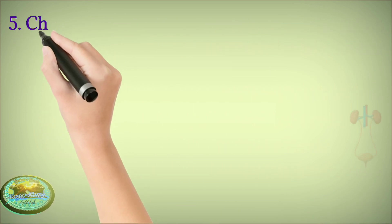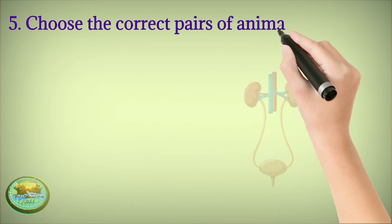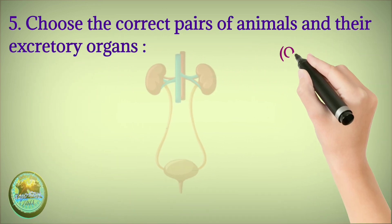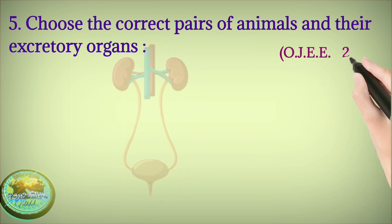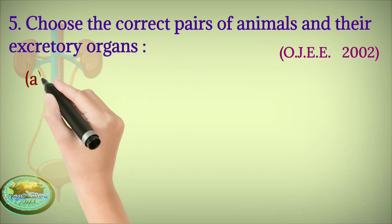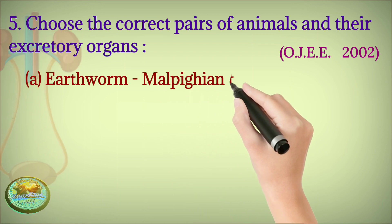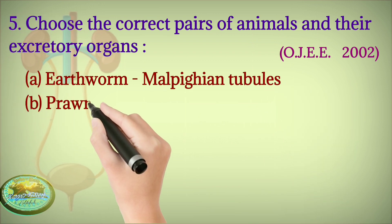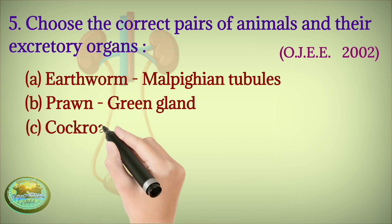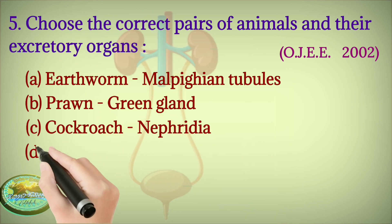Question 5: Choose the correct pair of animals and their excretory organs — Earthworm: Malpighian tubules; Prawn: green glands; Cockroach: nephridia; or Crustacea: flame cells?